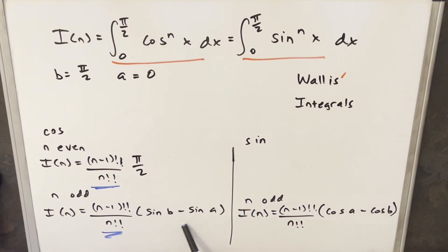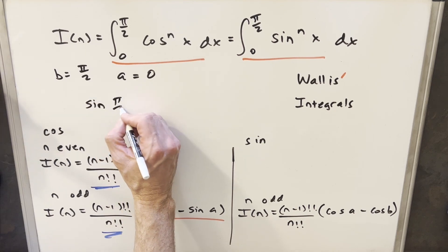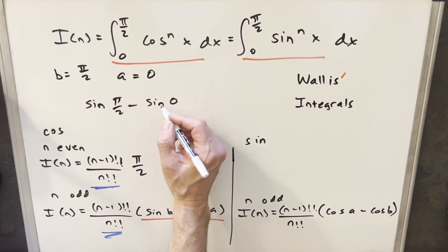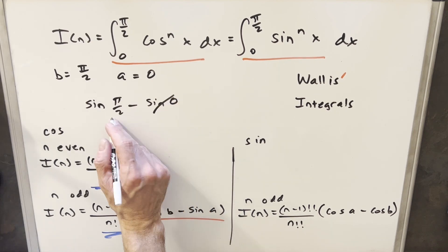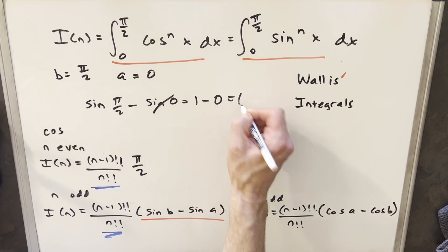When n is odd, we can use these formulas that we already did in the previous video. Now we can just take this here. We know our b and a values. This is going to become sine of b, which is π over 2, minus sine of a, which is going to be sine of 0. Sine of 0 is just 0. So sine of π over 2 is just 1. So we have 1 minus 0, or just 1.